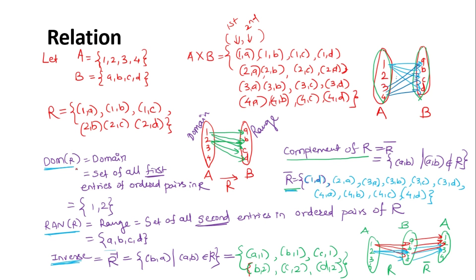The terminologies present in the relation are: domain, range, inverse, and complement. Domain is the set of all first entries of ordered pairs in R. Here the first entries are 1, 1, 1, 2, 2, 2 — so the domain is {1, 2}.